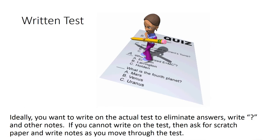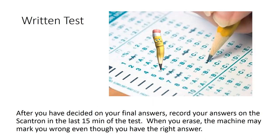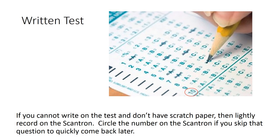Written test: Ideally, you want to write on the actual test to eliminate answers, write question marks, and make other notes. If you cannot write on the test, then ask for scratch paper and make notes as you move through the test. After you have decided on your final answers, record your answers on the scantron in the last 15 minutes of the test. When you erase, the machine may mark you wrong even though you have the right answer. If you cannot write on the test and don't have scratch paper, then lightly record on the scantron and circle the numbers you skip to quickly come back later.